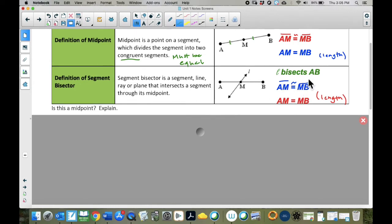Here I have a statement that says line l bisects segment AB. What that means is it causes two congruent parts, two equal parts. I can say segment AM is congruent to segment MB, or I can say the length of AM is equal to the length of MB.